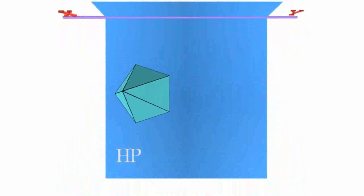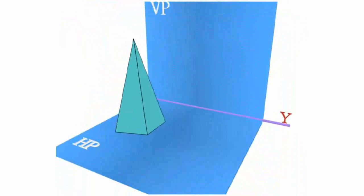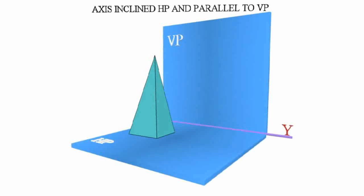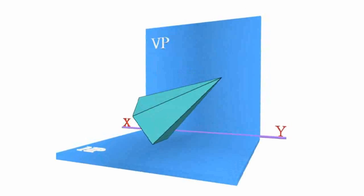After tilting in the final position, the pyramid is resting on HP on one of its base edges such that the axis is parallel to VP and inclined at 30 degrees to the HP.